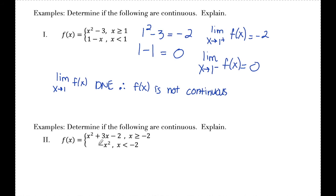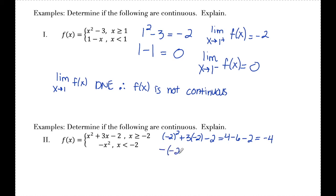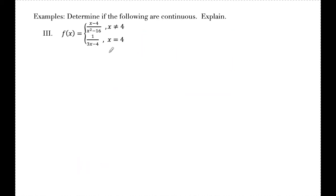Number 2 — same idea. I plug negative 2 into the first piece: negative 2 squared plus 3 times negative 2 minus 2 gives 4 minus 6 minus 2, which equals negative 4. Plugging negative 2 into the second piece, negative x squared, gives negative 4 as well. Since the limit from the right equals the limit from the left, f of x is continuous here.